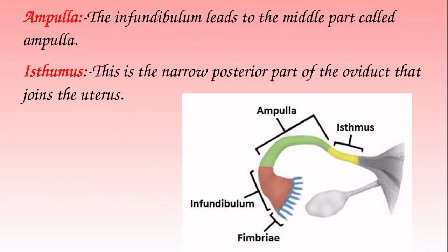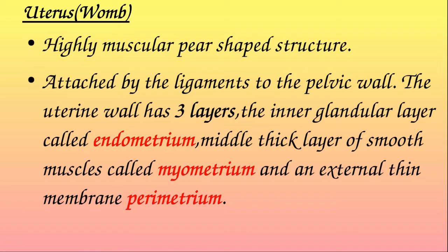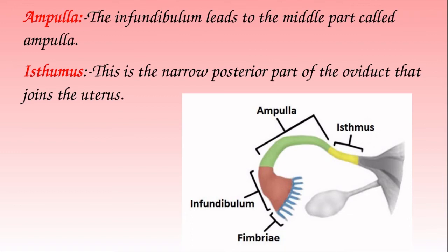The oviduct has an important function: fertilization takes place here. Specifically, fertilization occurs in the ampulla-isthmus region — at the junction between the ampulla and the isthmus.